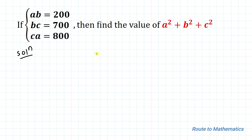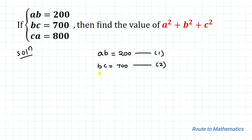So we have ab = 200 — let's take it as equation 1; bc = 700 — let's take it as equation 2; and ca = 800 — let's take it as equation 3.